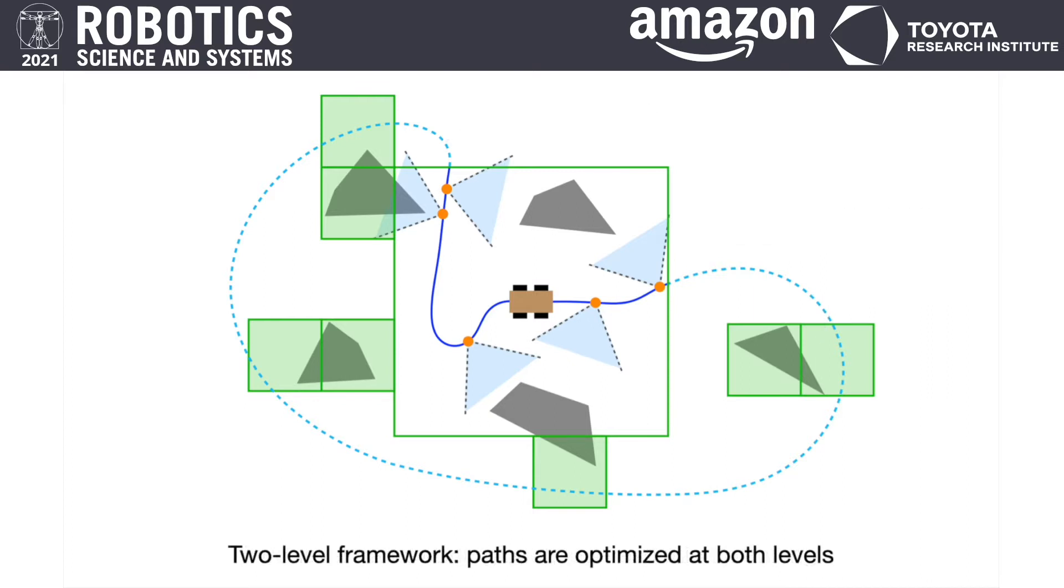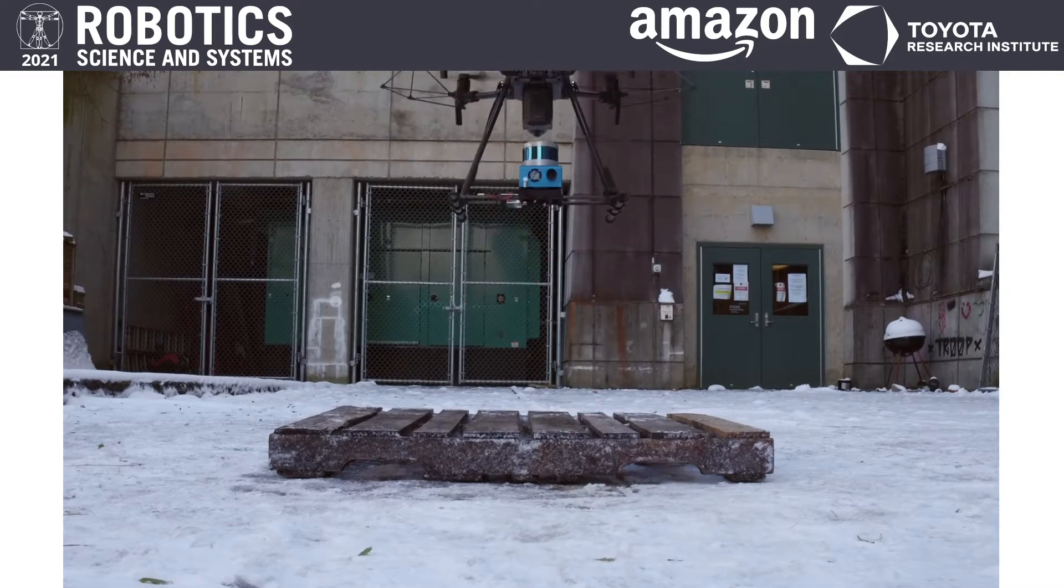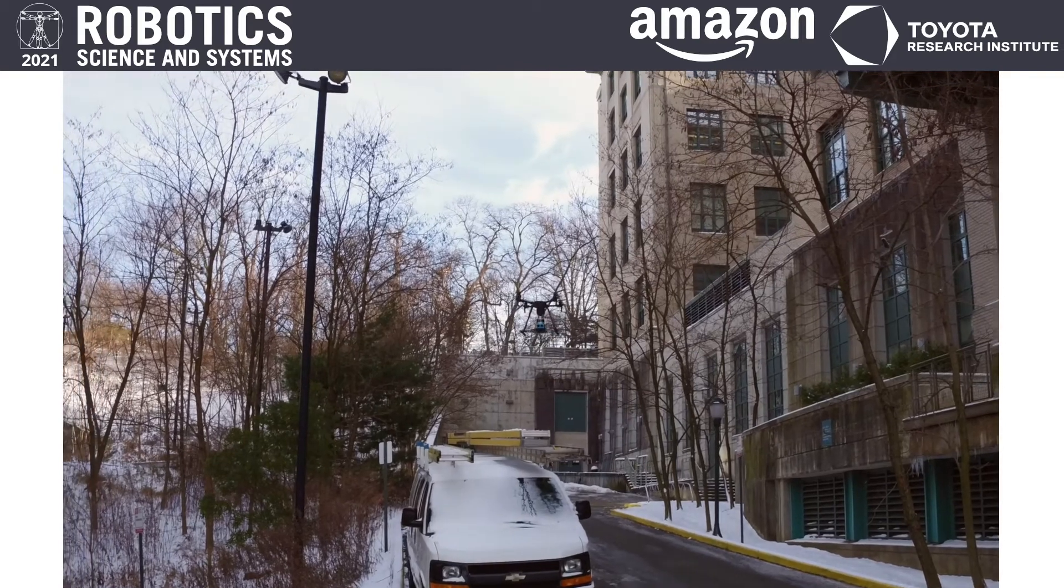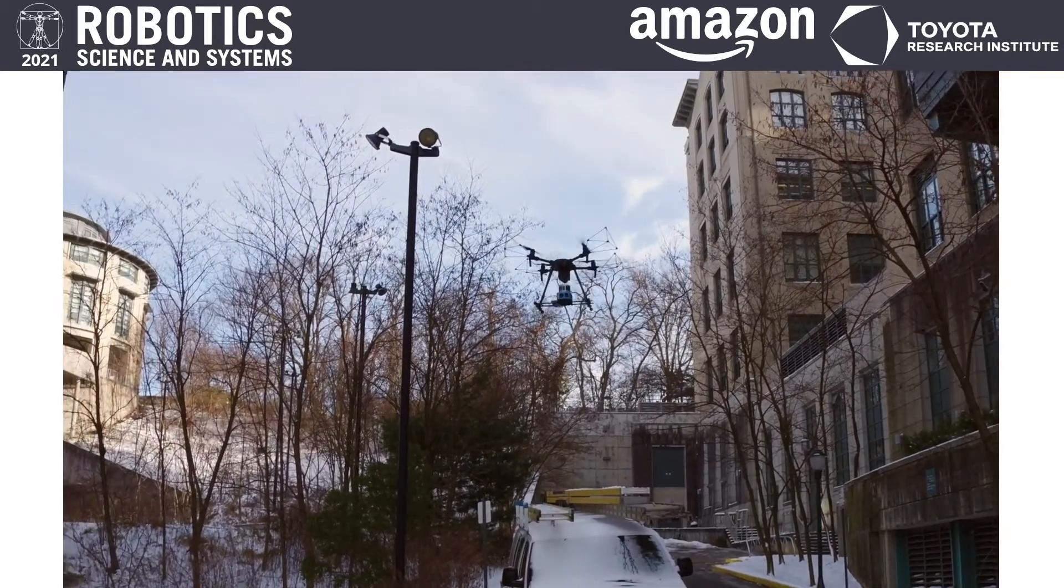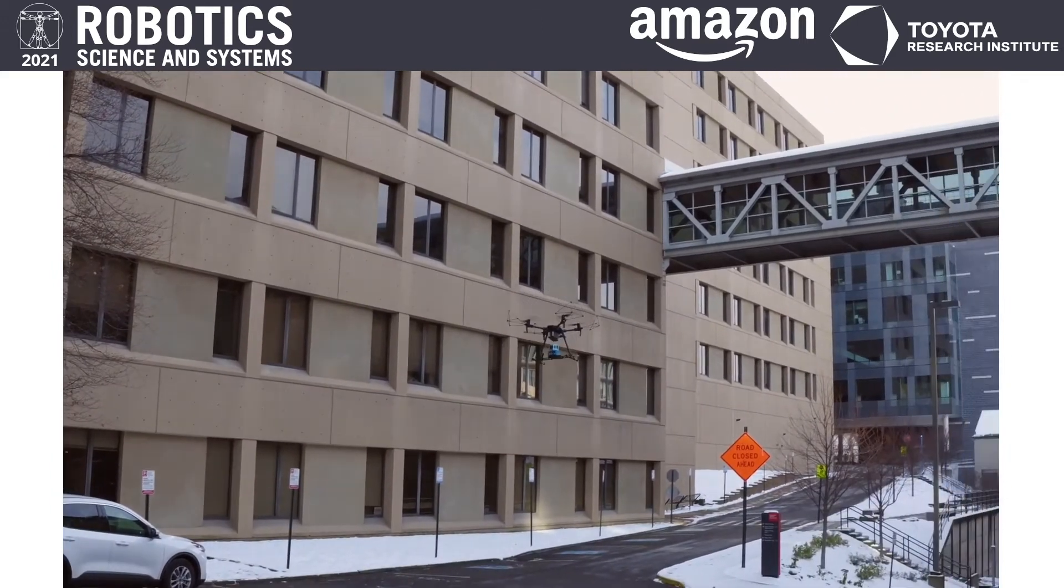The approach optimizes the paths at both levels by solving traveling salesman problems and then joins the paths together. The insight here is that the local level uses detailed processing to make sure the complete coverage in the surroundings of the vehicle. And the global level instead uses a low resolution representation to generate a comprehensive route, which guides the exploration at a high level.